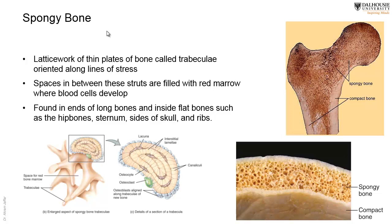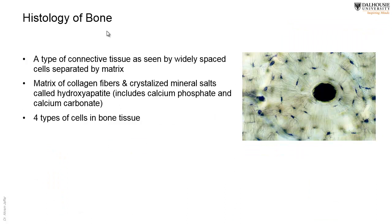Histologically, bone is a connective tissue with cells separated by matrix. The matrix has fibers and ground substance. The fibers are collagen fibers, which provide resilience — bone is not as brittle as you might expect. When collagen fibers are removed, bone becomes brittle and easy to break. The matrix also contains crystallized minerals called hydroxyapatite granules, which contain calcium phosphate and calcium carbonate — that is why bone is a reservoir for these minerals. There are four types of cells present in the bone.